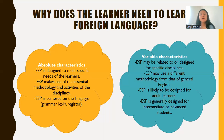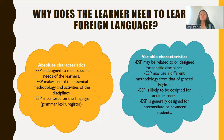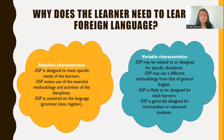When we talk about the variable characteristics, ESP may be related to or designed for a specific discipline as mentioned before. It can be for English for business, occupational purposes, vocational, or among others. A general English course is totally different from an ESP course. This is why in ESP we may use different methodology and we have to look for the best methodology for our students — the methodology that will cover all the students' specific needs.